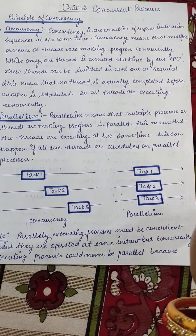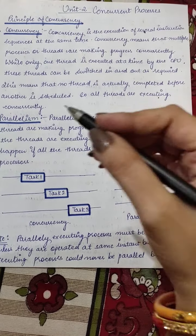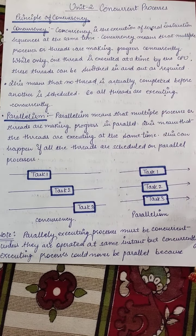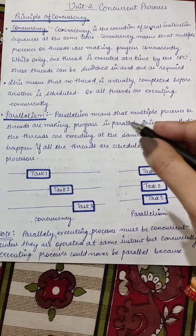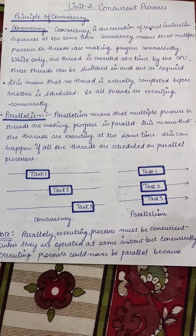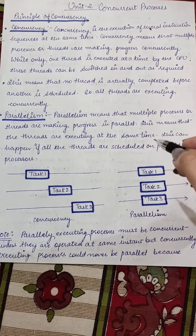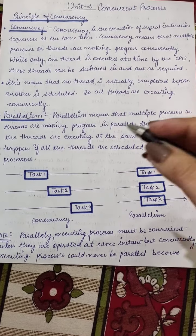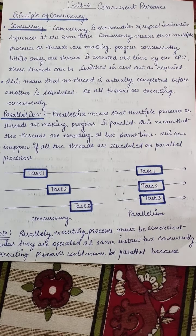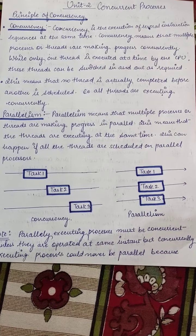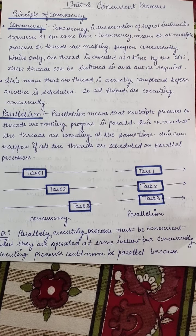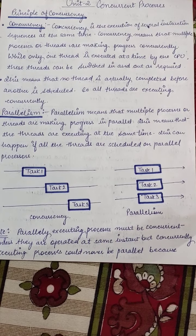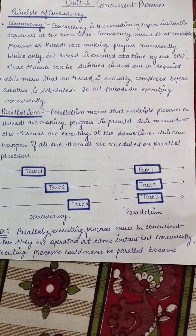Now when we talk about parallelism — parallelism means that multiple processes or threads are making progress in parallel. This means the threads are executing at the same time. This can happen if all the threads are scheduled on parallel processors. In parallelism, we have more than one processing unit, and we can schedule each processing element on each task.